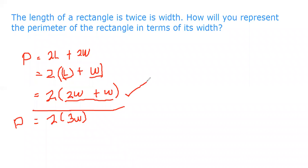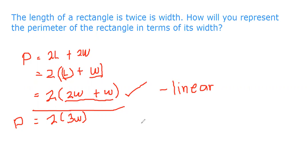So, is this quadratic or linear? This is linear. It did not become quadratic because we never multiplied W by W — we only have W to the first power. There is no exponent of 2 visible, so this is a linear function, not a quadratic function.